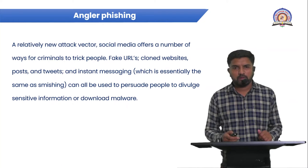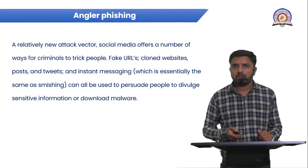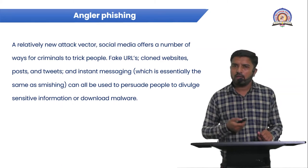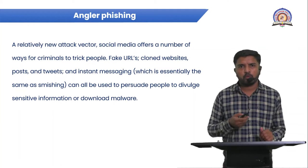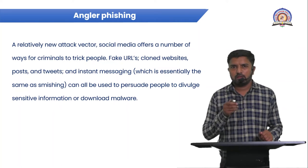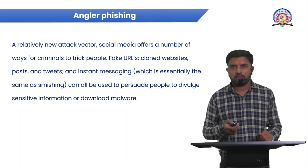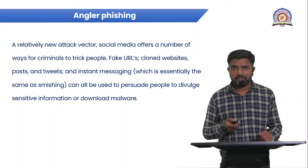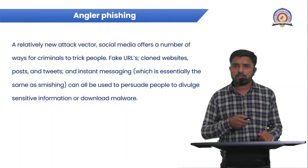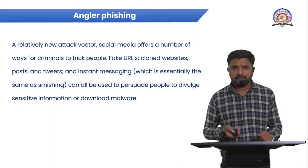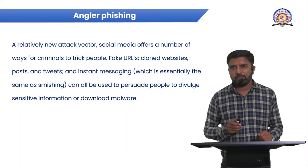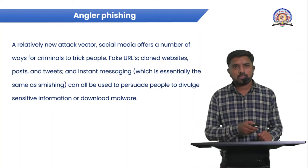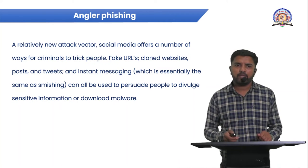The next part of phishing is angler phishing. Today we all use social media platforms like WhatsApp, Facebook, Instagram, or others. When a criminal attacks data using these applications — perhaps through fake URLs, clone websites, dummy websites, or tweets — users may get diverted and trust those messages. If users follow those steps, angler phishing may occur.